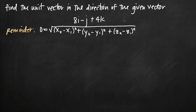Today we're going to be talking about how to find the unit vector which is in the direction of the given vector. In this particular problem we've been given the vector 8i minus j plus 4k, and we've been asked to find the unit vector that's associated with this vector and is in the same direction as this vector.